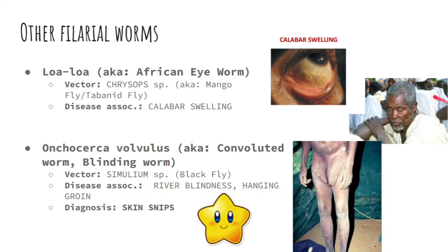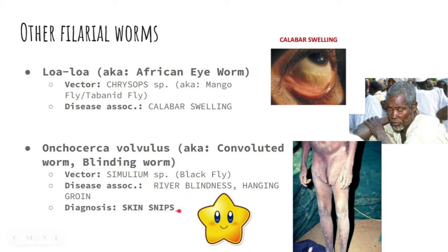Onchocerca volvulus is also known as the convoluted or blinding worm. Its vector is the Simulium species, known as the black fly. Diseases associated with it are river blindness and hanging groin. The diagnostic test for Onchocerca volvulus is skin snips — this is a recall question in the board exam. Please take note: the diagnosis of Onchocerca volvulus is done through skin snips.